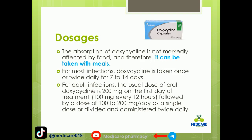The absorption of doxycycline is not markedly affected by food, and therefore it can be taken with meals. For most infections, doxycycline is taken once or twice daily for seven to fourteen days. For adults, the usual dose is 200mg on the first day of treatment, or 100mg every 12 hours, followed by 100 to 200mg per day as a single dose or divided twice daily.